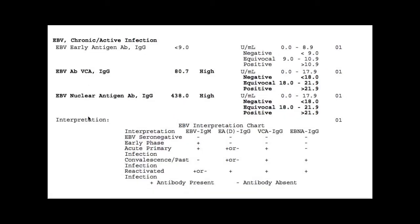Here's an Epstein-Barr example from our office looking at reactivation, past infection, or current Epstein-Barr activity. There are three different antibodies on there. The nuclear antigen — positive is above 21, and this person is at 438, showing quite a significant antibody response to Epstein-Barr. Looking at the chart, a double-positive result shows a past infection or possibly a more recent reactivation — and that was something we were specifically evaluating for this patient.